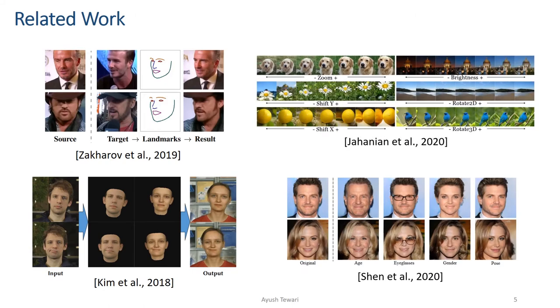Concurrent to us, other approaches also explore adding different kinds of control to StyleGAN as well as other generative models. However, they do not use a 3D model of the scene for control.